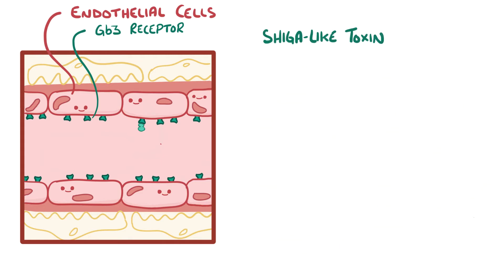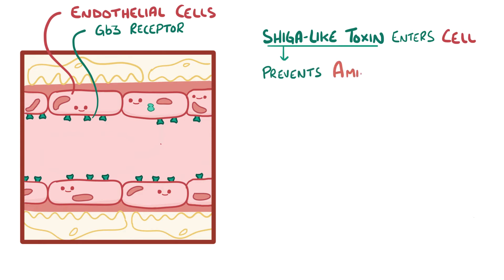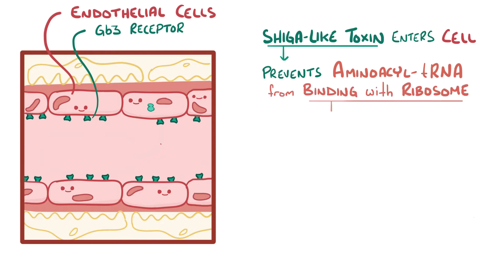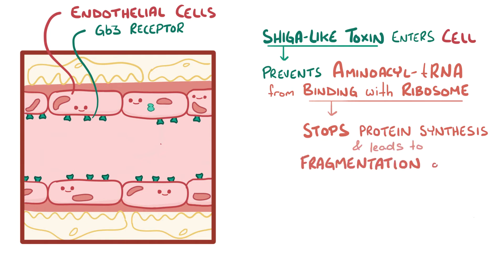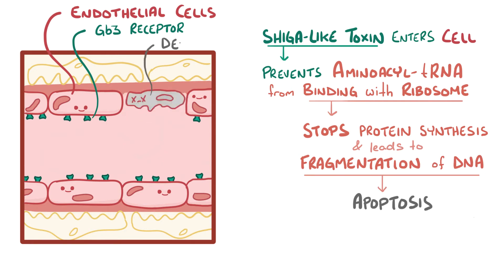Once the toxin binds to the GB3 receptor, it gets engulfed by the endothelial cells, and once inside, it wreaks havoc on the cell. The toxin prevents aminoacyl-tRNA — the molecule that carries amino acids to make proteins — from binding to the ribosome, stopping all protein synthesis in the cell. In addition, it also leads to fragmentation of the DNA that activates apoptotic or cell suicide pathways, which causes the endothelial cell to die.